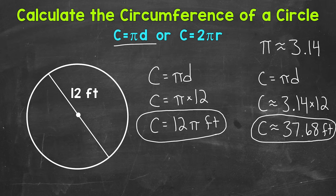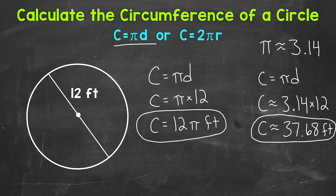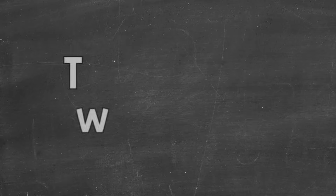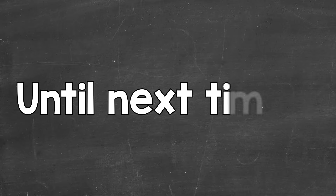This is an approximate circumference since we used an approximate rounded version of pi. So there you have it — that's how you calculate the circumference of a circle given the radius or given the diameter. We used the formulas pi d and 2 pi r depending on what we were given, and we wrote our circumference in two different ways: in terms of pi, and in decimal form using an approximate value of pi. I hope that helped. Thanks so much for watching. Until next time, peace.